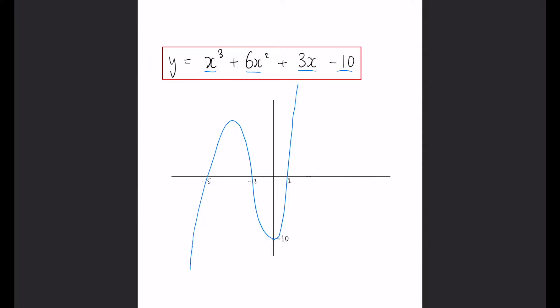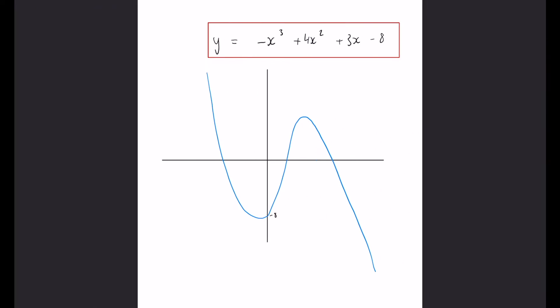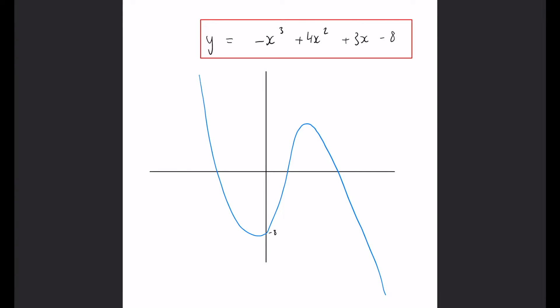You can probably guess a negative, on the other hand, is going to start from the top left, do the S shape, and then come down in the bottom right. This is another example of a cubic, but just a negative.